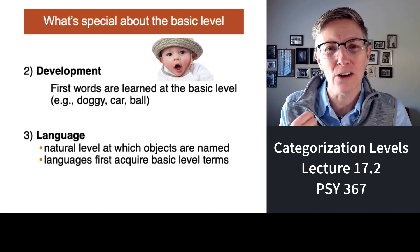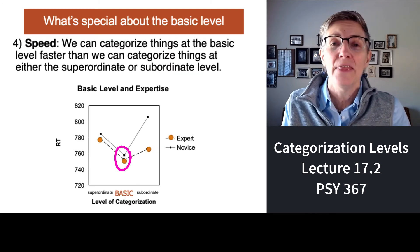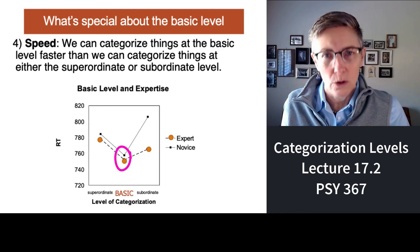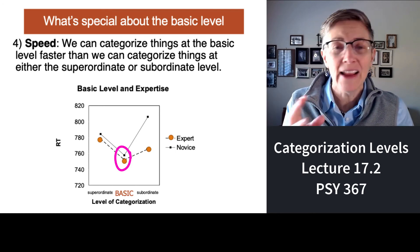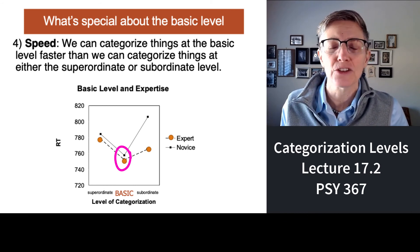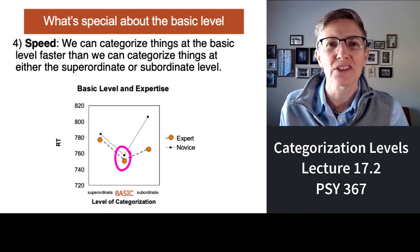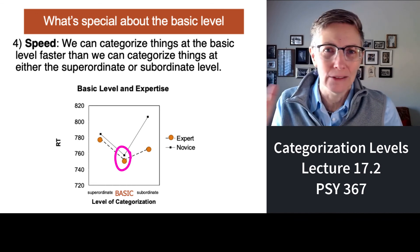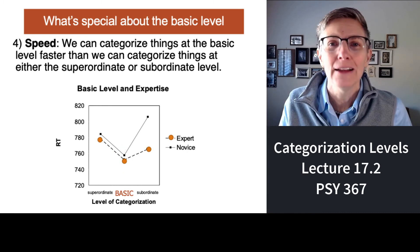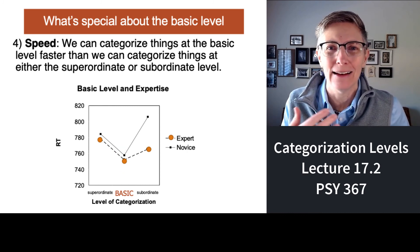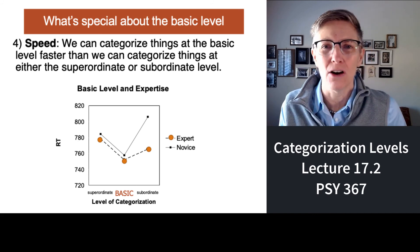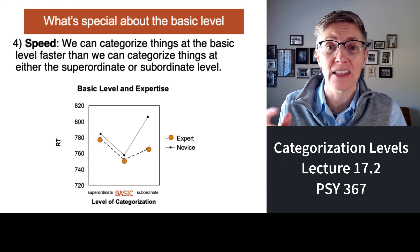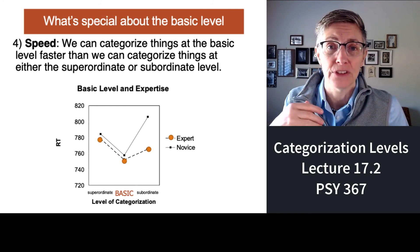We can also categorize things at the basic level faster than at more general or more specific levels. If I show you pictures of objects and ask you to categorize them, you can do it most quickly at the basic level — dog, cat, zebra, car — compared to asking for a kind of cat or kind of car, or even the more general categorization of animal versus vehicle versus furniture. That's the evidence that basic level categories are our preferred level.